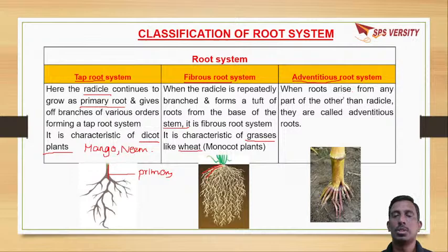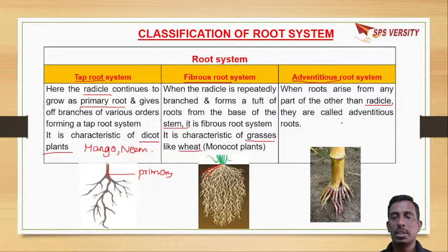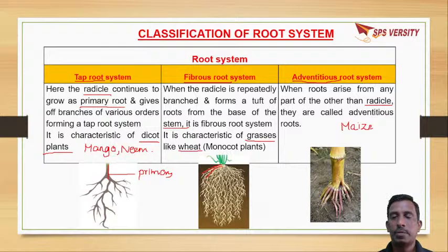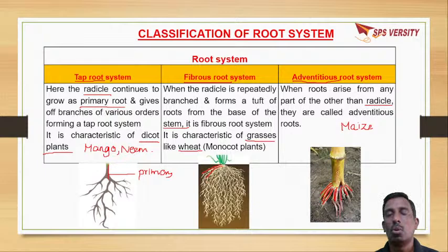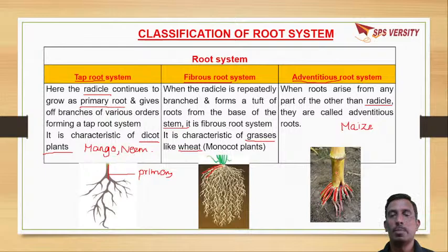Now we will discuss the adventitious root system. Adventitious means roots that arise from other than the radicle - they are called adventitious roots. For example, in maize, some roots will arise from the lower nodes of the stem. So these roots are called adventitious roots. Basically we can divide root system into tap root system, fibrous root system, and adventitious root system.